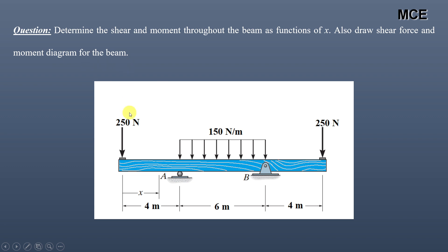You can see this is a simply supported beam of length 14 meters on which two point loads of magnitude 250 newtons are applied at the left and the right end. Also, a UDL of magnitude 150 newton per meter is applied on a length of 6 meters between these two supports. We have to find the shear and the moment functions.